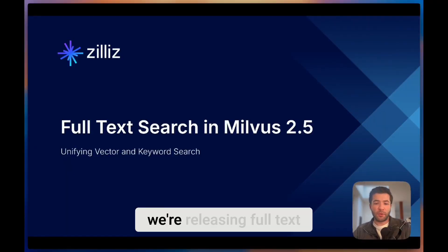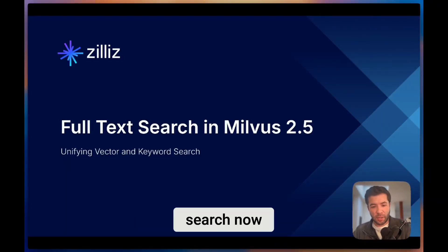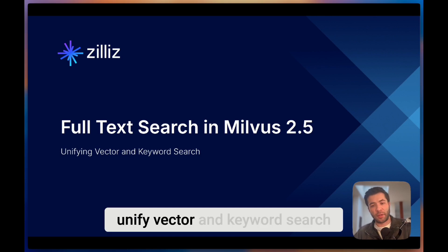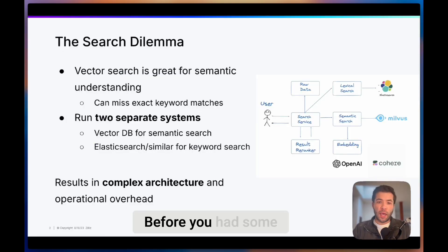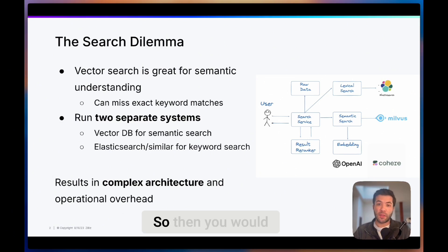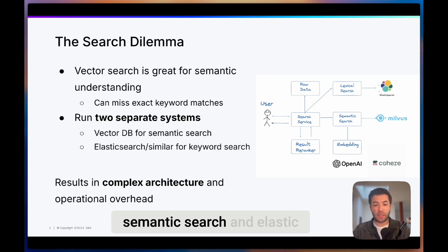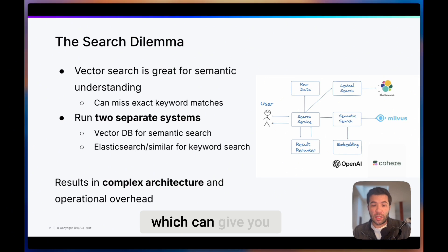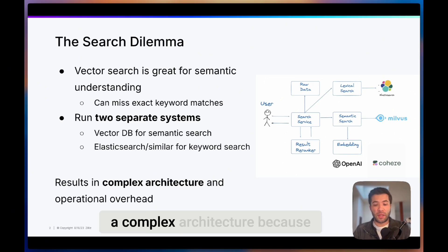With Milvus 2.5, we're releasing Full Text Search, which allows you to unify vector and keyword search. Before, you had a dilemma — you would use vector search, which is great for semantic understanding, but that can miss exact keyword matches. So then you would run two separate systems: one vector database for semantic search and Elasticsearch or similar for keyword search, which can give you some good results. But then you have a complex architecture because you have two different systems to handle.